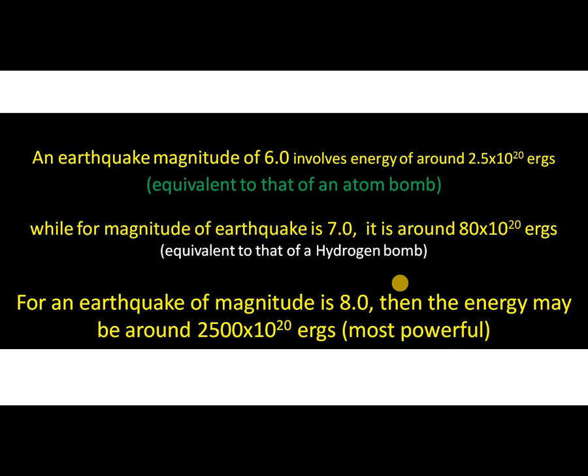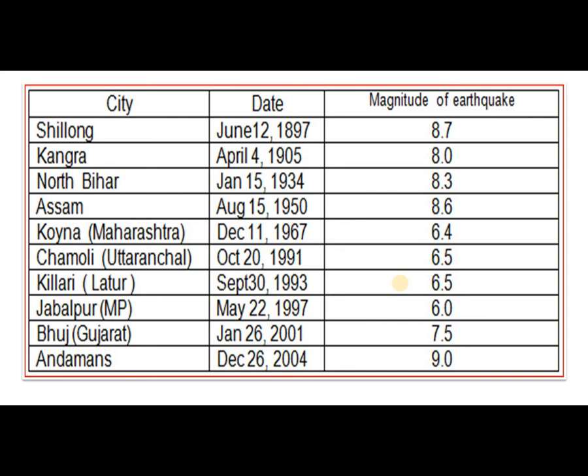For an earthquake of magnitude 8, the energy may be around 1500 × 10²⁰ ergs, which is the most powerful. Richter's scale has magnitude numbers from 1 to 10, and the maximum known magnitude is 9.6. The highest magnitude recorded in India was 9.0 on December 26, 2004 in Andaman Island. An earthquake of magnitude 8.7 was seen in Shillong on June 12, 1897, and magnitude 8.6 was recorded in Assam on August 15, 1950.